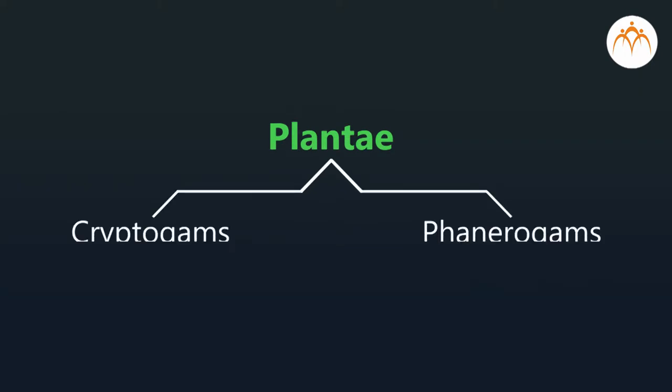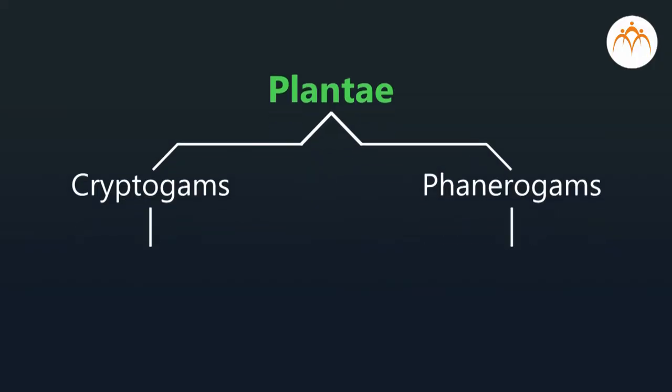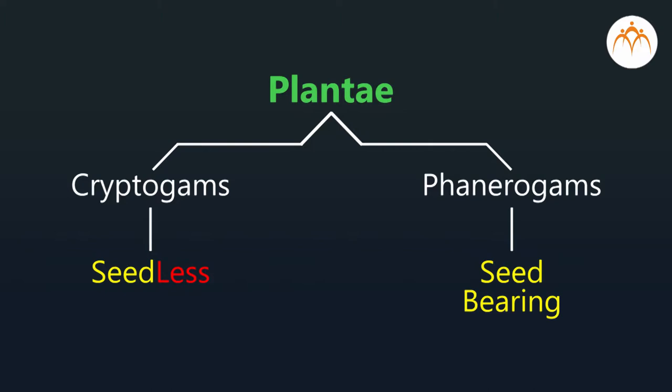The plant kingdom is classified into two sub-kingdoms: Cryptogames and Phanerogames. How do they differ from each other? Cryptogames are seedless plants, and Phanerogames are seed-bearing plants. The great botanist Eichler gave us this method of classification.